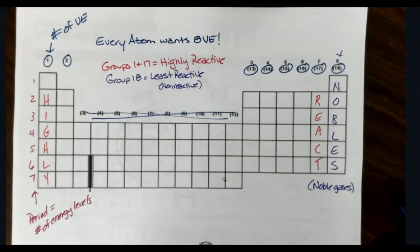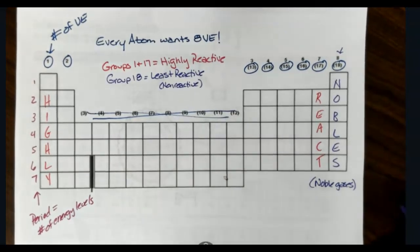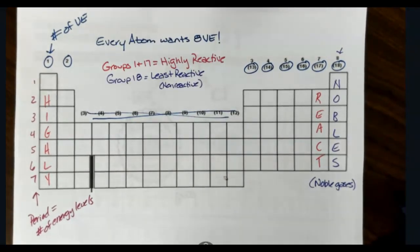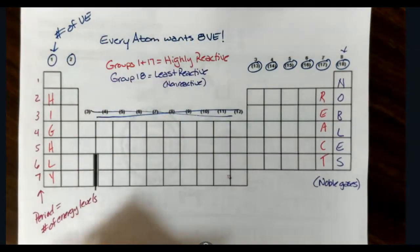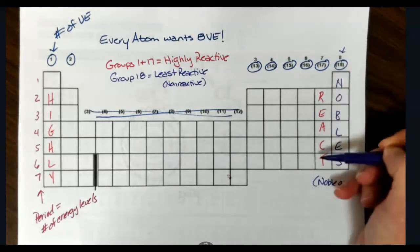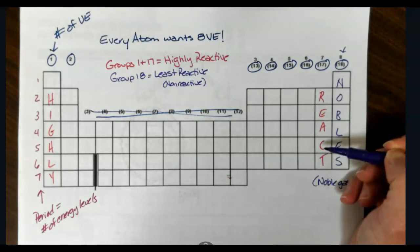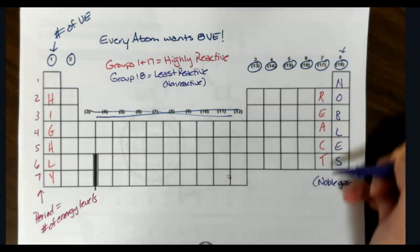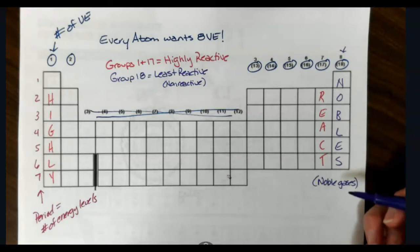Now we said that they determine reactivity. Well, there are certain groups that are highly reactive, very unstable, because the goal of every atom is to get to 8 valence electrons. Group 1 is highly reactive metals because it only has 1 valence electron. It's far away from filling. Group 17 are highly reactive nonmetals because they have 7 valence electrons. They really want one more. Now group 18, on the other hand, are nonreactive. They are called the noble gases because they already have 8 valence electrons, so they have a full outer shell.